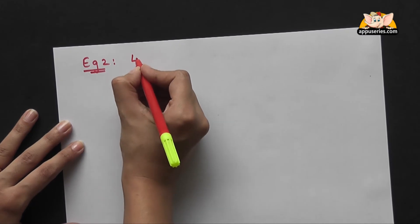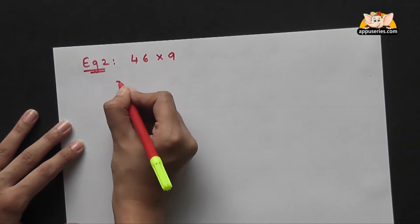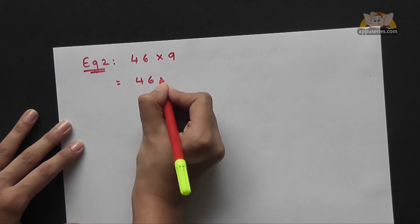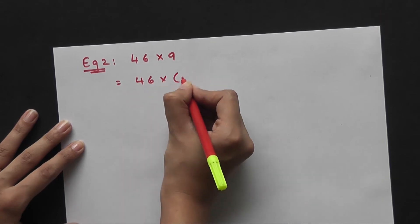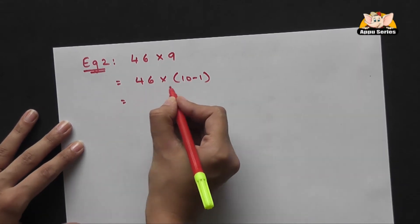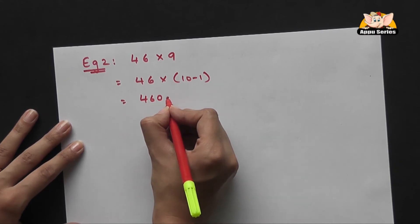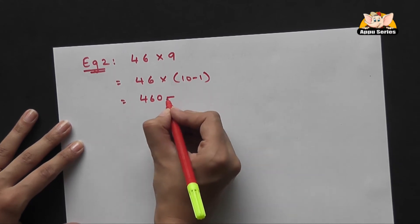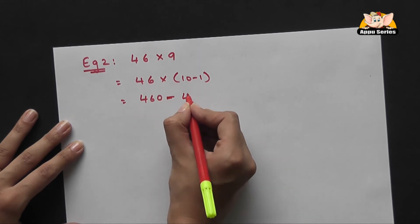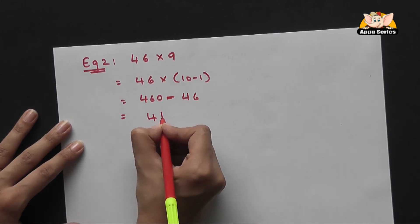We'll take a different example now. We'll do 46 into nine, which is forty-six into ten minus one. That gives you forty-six into ten is four sixty. Bring the operator down and forty-six into one is forty-six. So your answer is four hundred and fourteen.